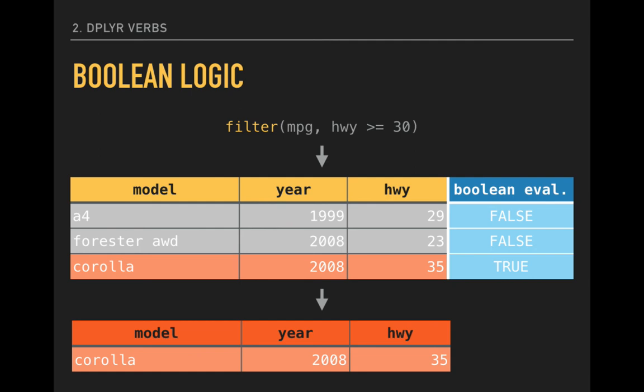Only the Toyota Corolla is filtered into the new data frame because the evaluation for its 35 miles per gallon is greater than or equal to 30, and therefore evaluates as true. This is the fundamental logic behind both the filter function and any expression that we evaluate in R.